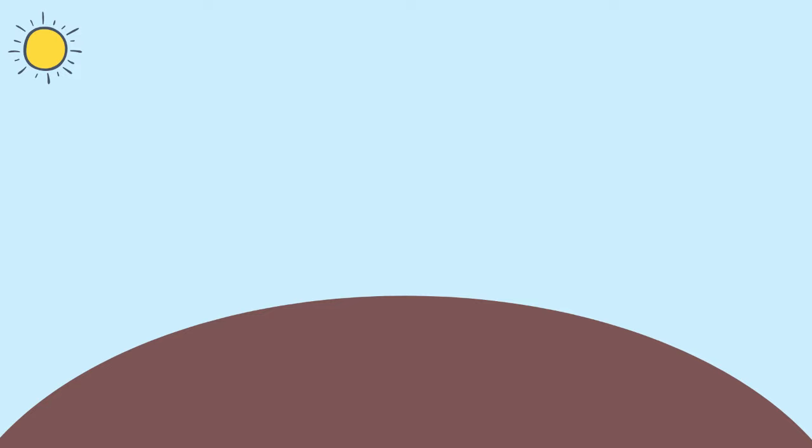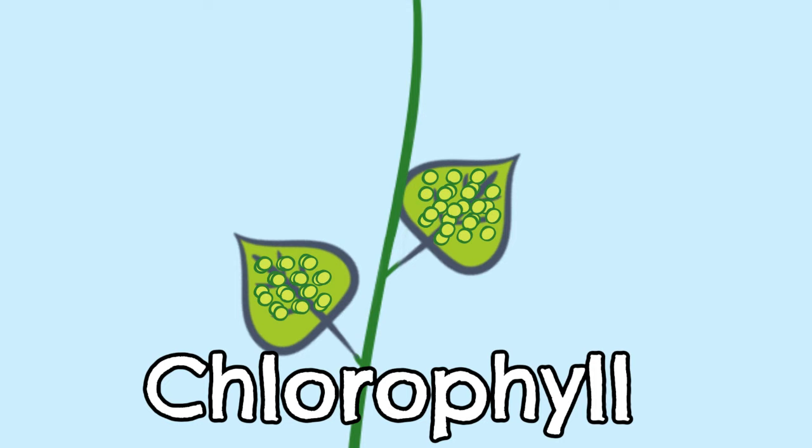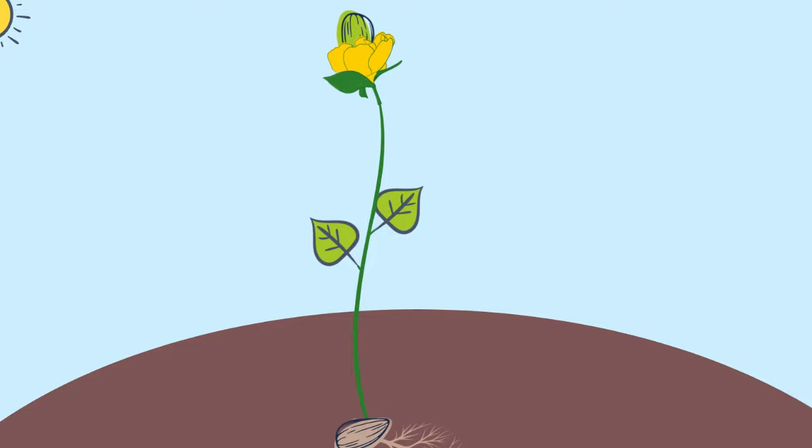Photosynthesis is the process that allows each plant to grow. That's when chlorophyll in the leaves gets energy from the sun, do you know?